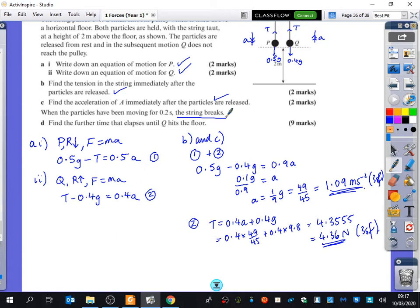So if the string breaks, what's going to change about this situation? The tension. The tension is no longer there because the string has snapped. So it's not tight anymore, which means there's no tension. So after 0.2 seconds, the string is going to break, which means the tension will then become zero. We want to then find the further time that elapses until Q hits the floor. So we better think about what happens here. Q is moving upwards for 0.2 seconds. Then the string breaks. And when the string breaks, there's no tension, which means there's going to be a new acceleration. The acceleration for this particle, we can very quickly tell what the acceleration will be by looking at this, and we'll do that in just a second. And then we need to find out how long it takes for it to hit the floor.